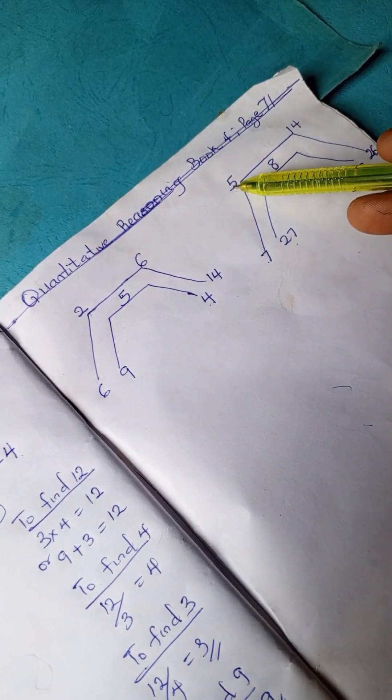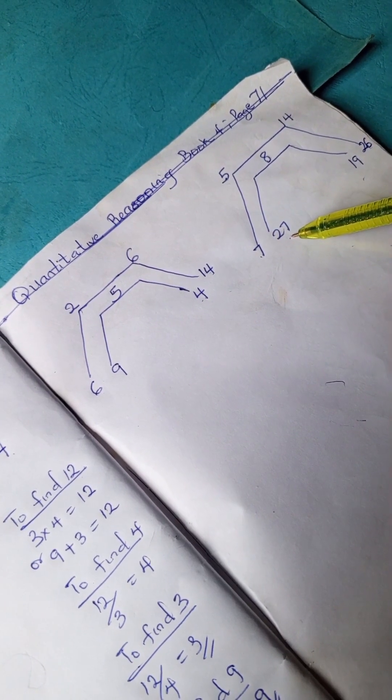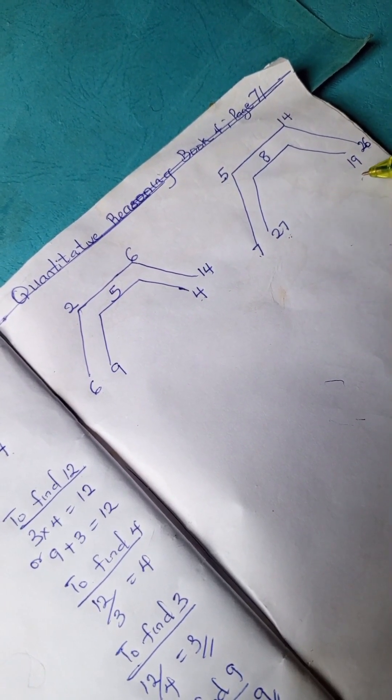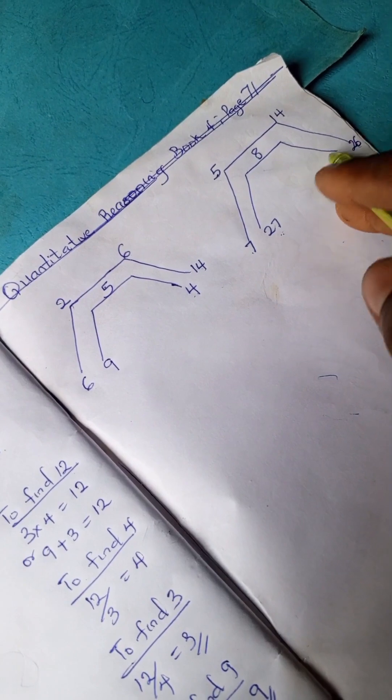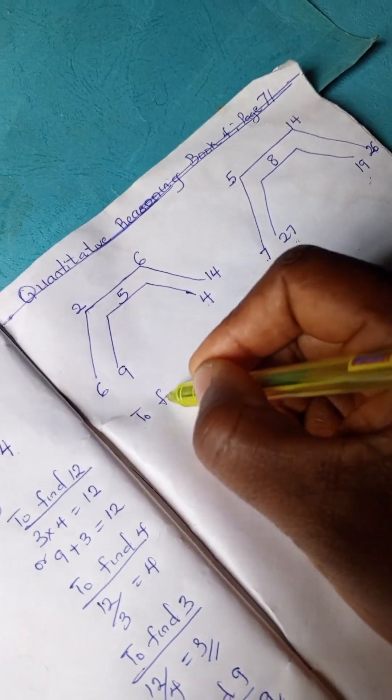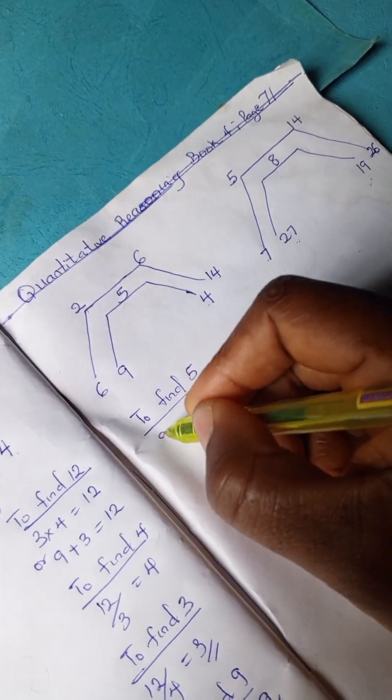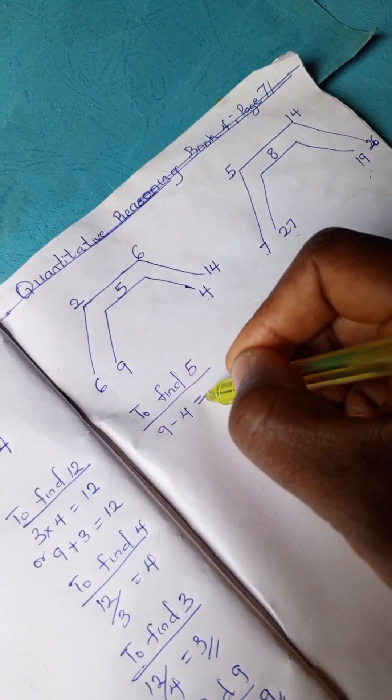So here we have 27 minus 19 is 8. With this we can actually work. We have to find 5. Let's start with this. We have 9 minus 4 is 5.